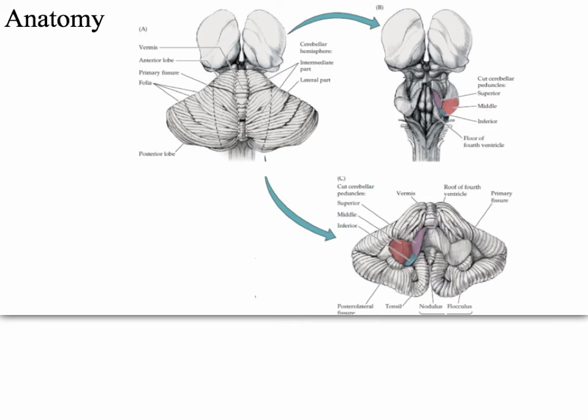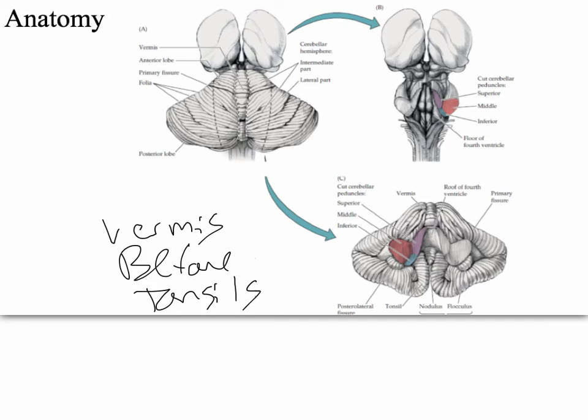Let's review the anatomy of the cerebellum because that's what all of these disorders have to do with. This would be the cerebellum — it sits on the back of the brainstem. This middle part of the cerebellum is called the vermis. And then on the other side, down here, we have these things called tonsils. The order of development is actually quite important in distinguishing type 2 and type 1, because the vermis develops before the tonsils.